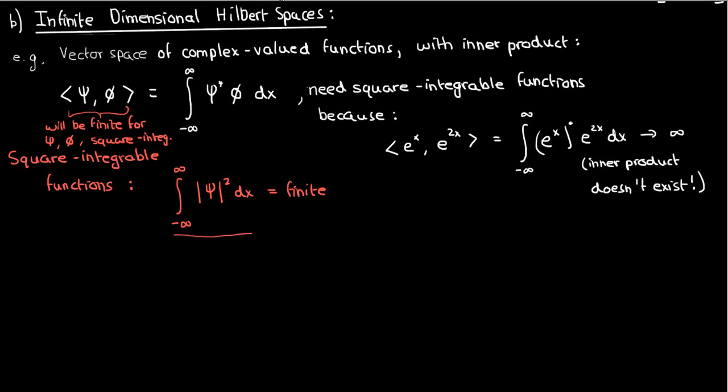It turns out that for quantum mechanics, the square integrable functions are also normalized, which means that this integral equals 1. This is part of the normalization condition that you'll see later on.